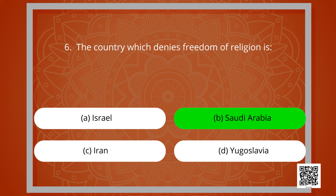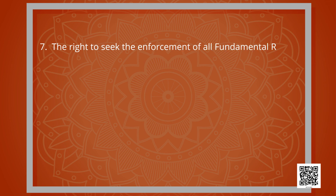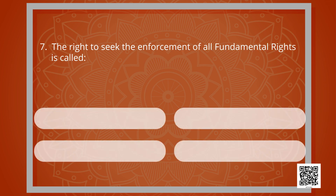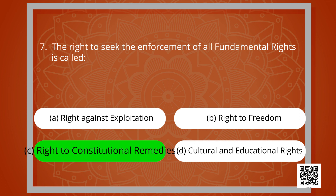The last question: the right to seek the enforcement of all fundamental rights is called the right against exploitation, right to freedom, right to constitutional remedies, or cultural and educational rights? The correct answer is option C: right to constitutional remedies.